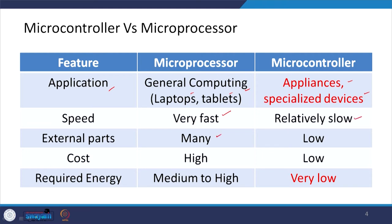Regarding external parts, there are many in a microprocessor and few in a microcontroller. In terms of cost, the microprocessor is high cost while microcontrollers are low-cost devices. The energy required is medium to high for microprocessors, whereas for microcontrollers the energy required is very low.